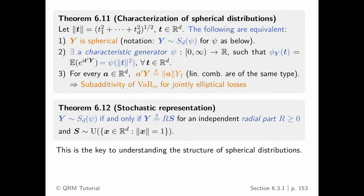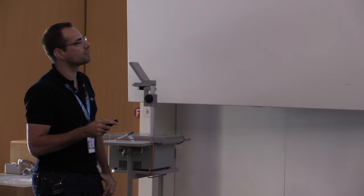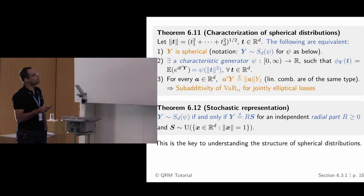There's a very important theorem, proven in the book, about the characterization of spherically distributed random vectors. It says the following are equivalent. First, a vector Y follows a spherical distribution if and only if there is a function called the characteristic generator with which you can write the characteristic function such that it is constant on spheres. Characteristic functions give the shortest proofs for properties and results, though we won't encounter them too much.